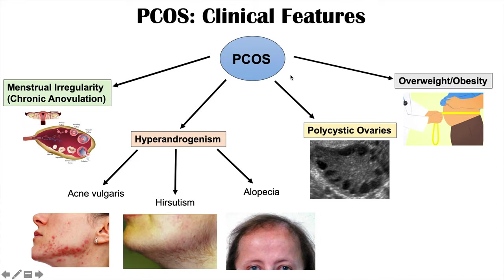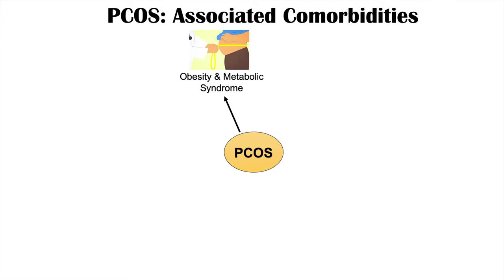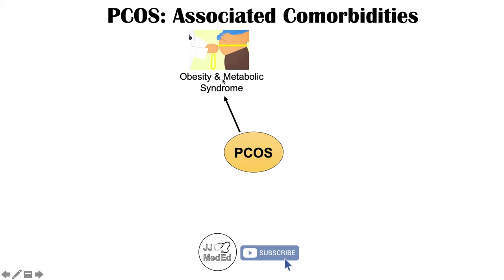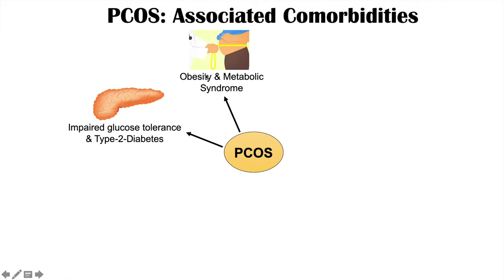What are some of the associated comorbidities in PCOS? One is obesity combined with metabolic syndrome, which involves elevated blood pressure or hypertension, high levels of lipids in the blood — hyperlipidemia or dyslipidemia — and central obesity. Another associated comorbidity is impaired glucose tolerance and type 2 diabetes. Because of obesity and metabolic syndrome, there are issues with impaired insulin sensitivity that can ultimately lead to type 2 diabetes.